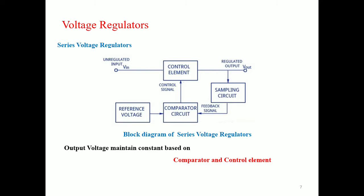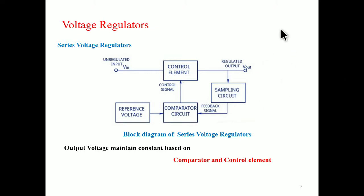The series voltage regulator block diagram has a control element, a comparator circuit, a sampling circuit, and a reference voltage. If the output voltage increases, the comparator circuit provides a control signal to cause the series control element to reduce the magnitude of the output voltage, thereby maintaining the output voltage constant. With the help of the control element and comparator, we keep the output voltage constant.